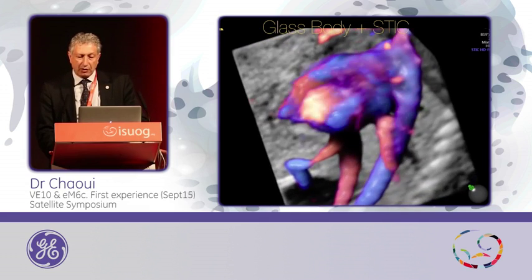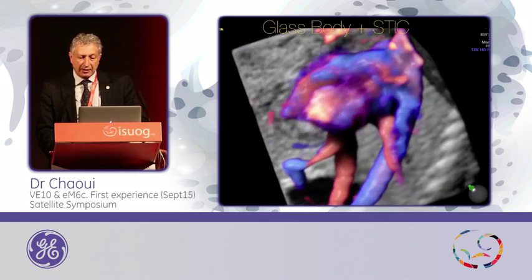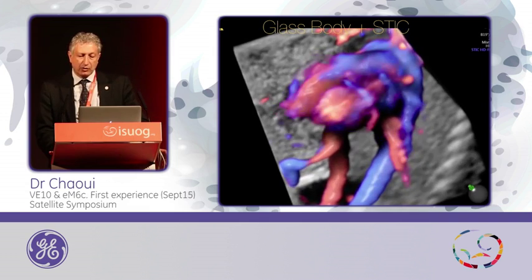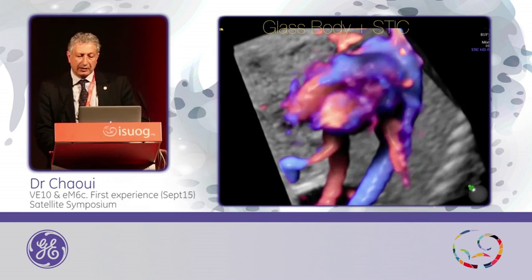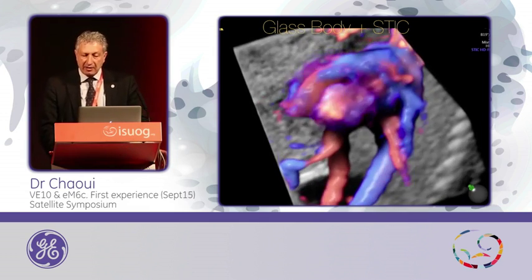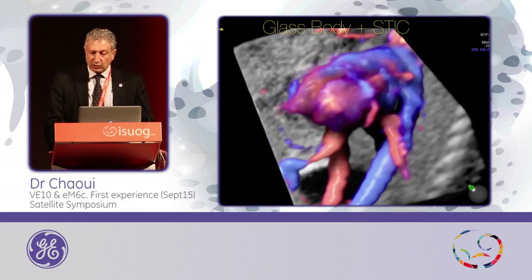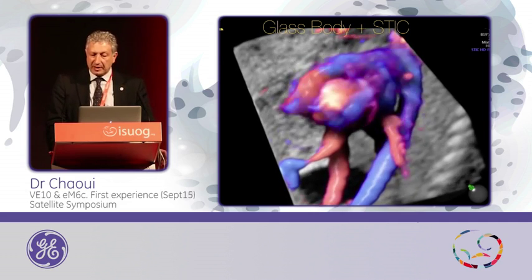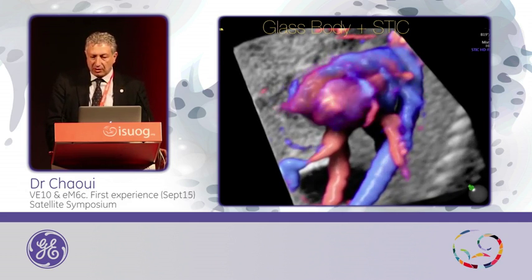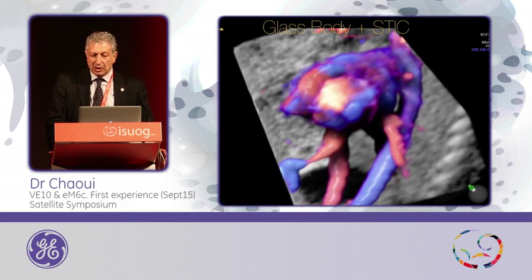And you can rotate the volume and even change the direction of light. So if you want to see the lower part, and these two pulmonary veins are not well appearing in this plane, you can rotate everything to have the best look at the heart as you want.